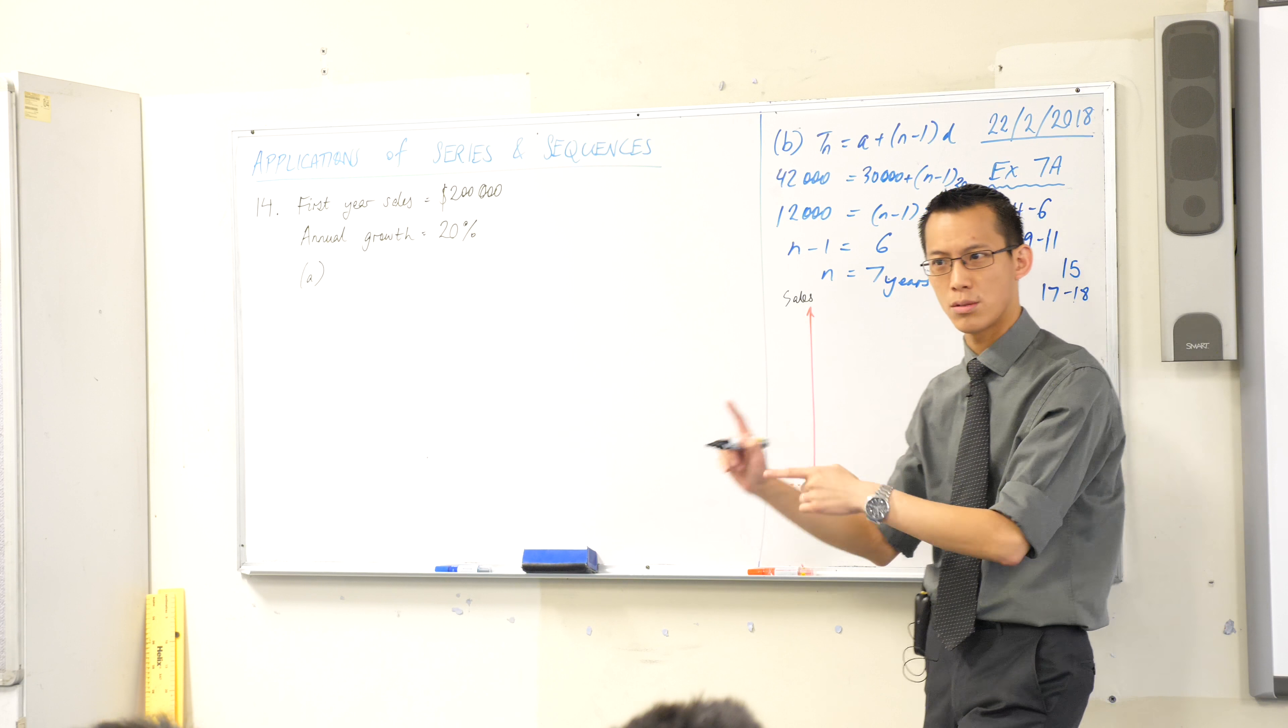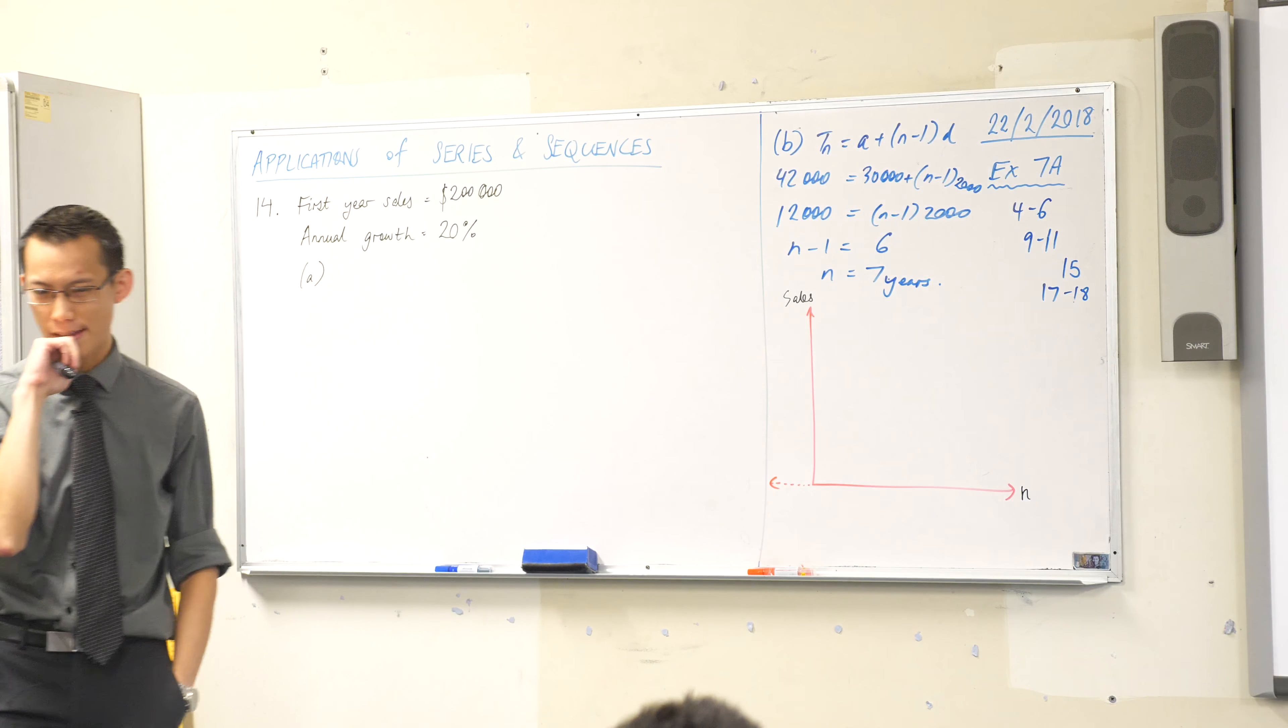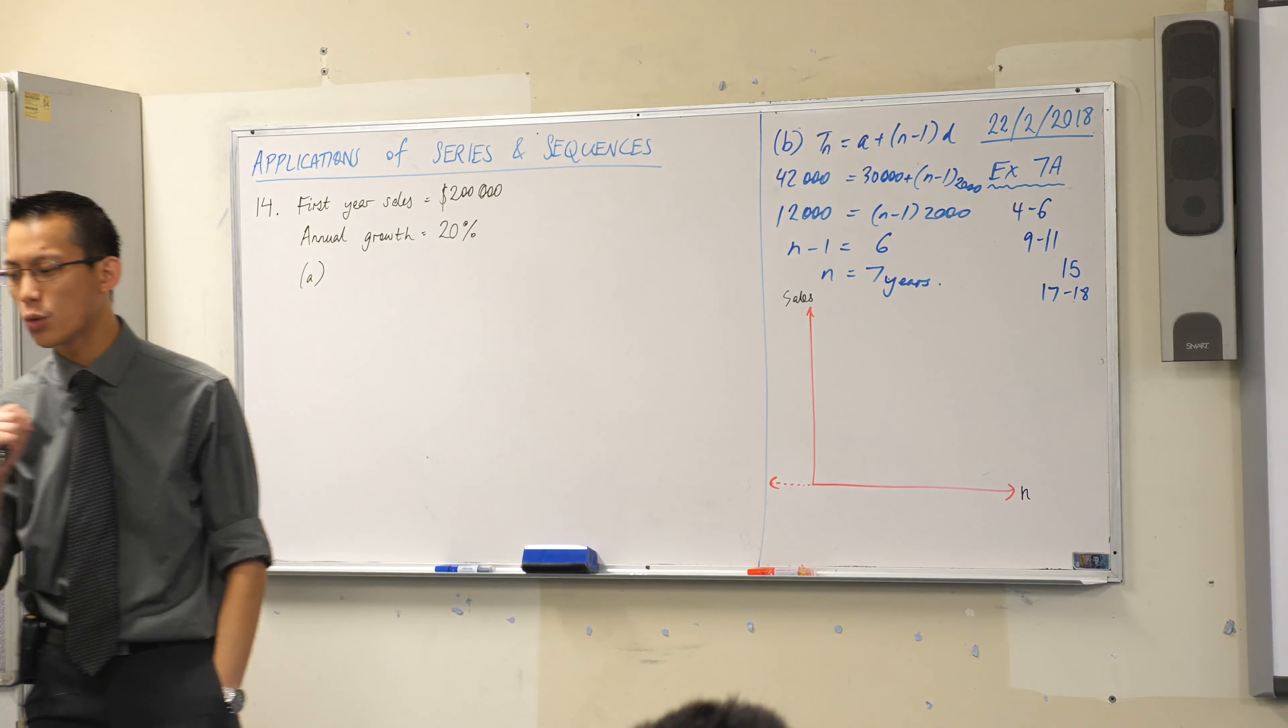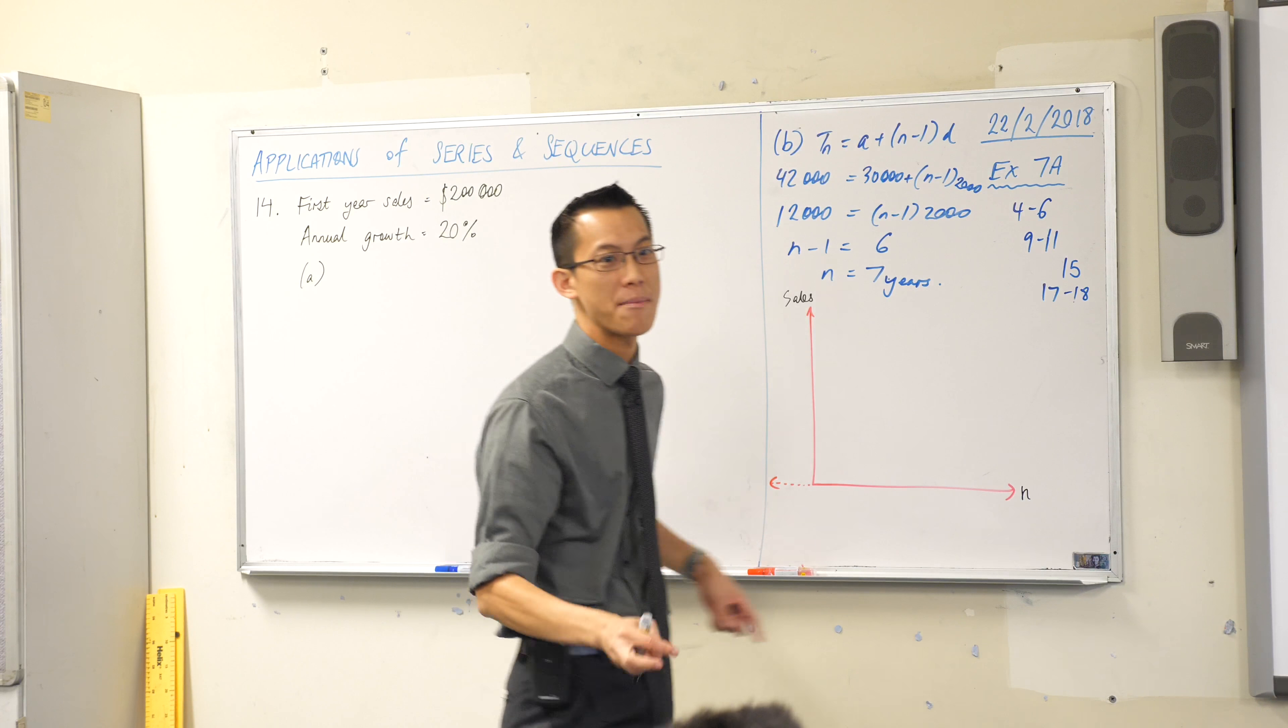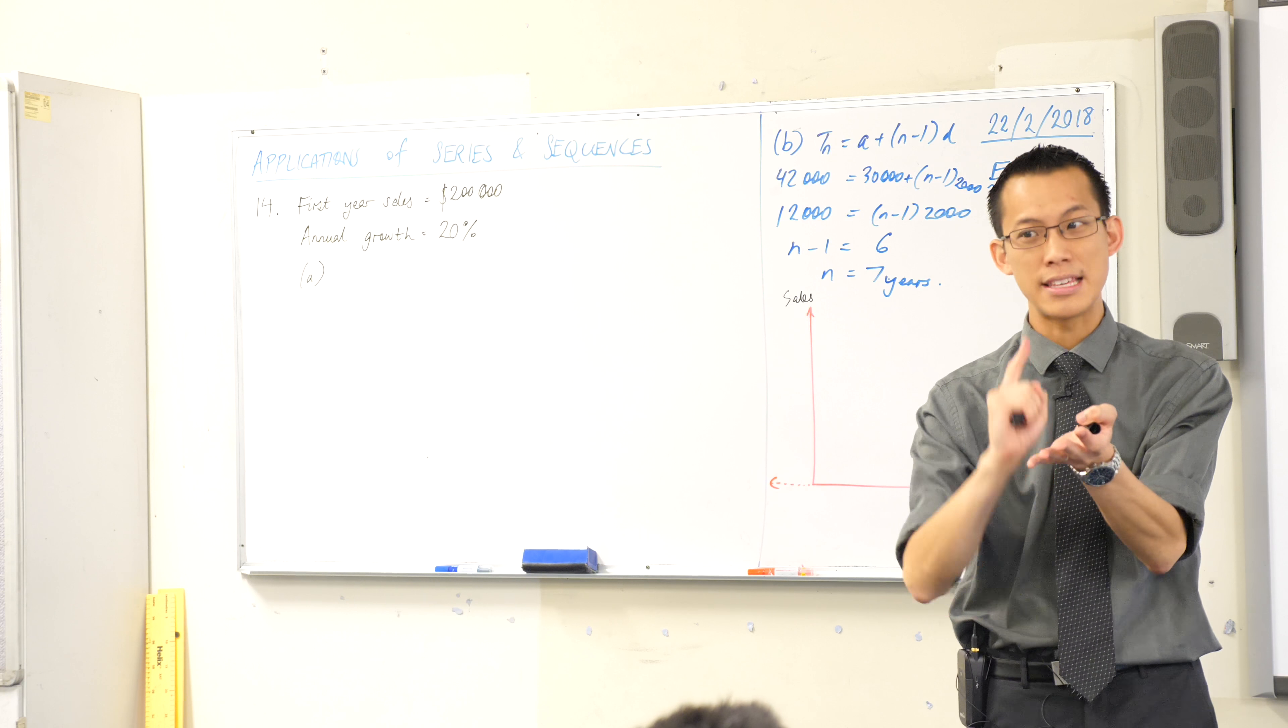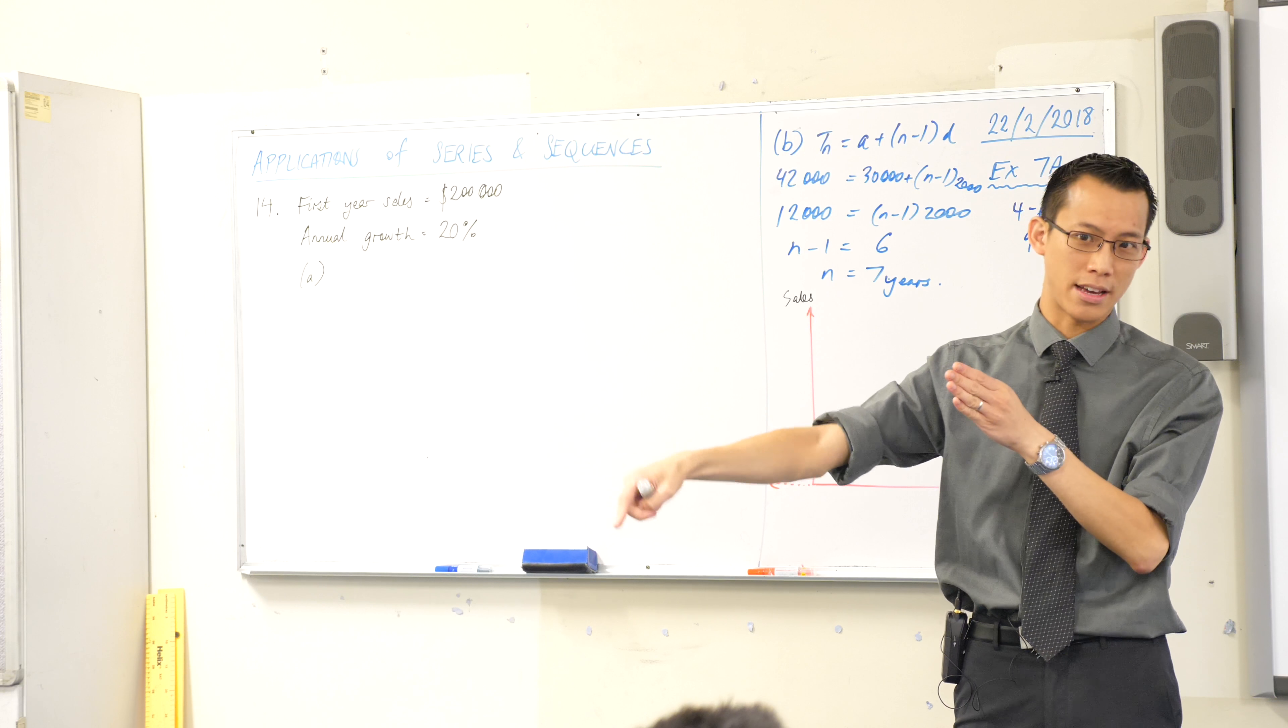Read it again if you're not sure. It says in which year do annual sales first exceed? So when they say annual sales they mean a particular year, one year and only one year, so that tells you it's the nth term not the sum of the first n terms. We're going to come to the sum in the next question.